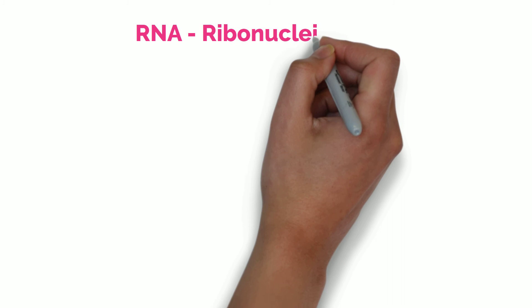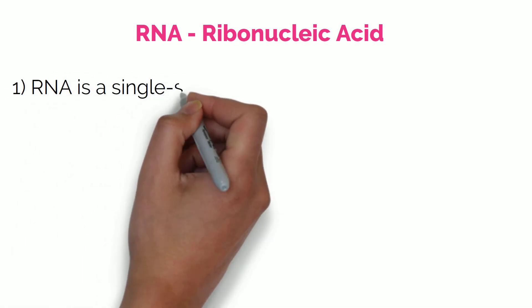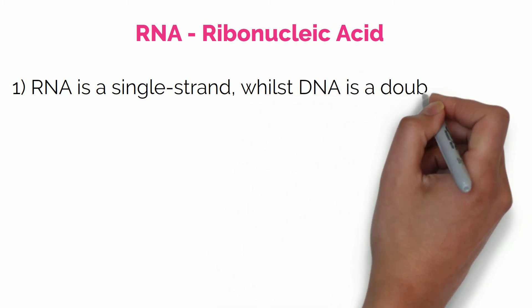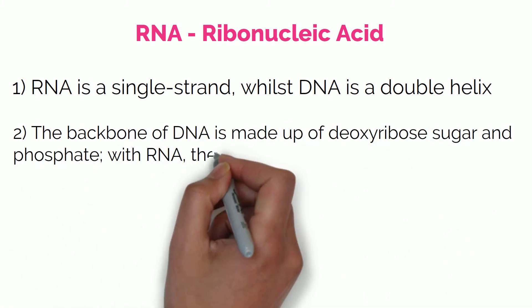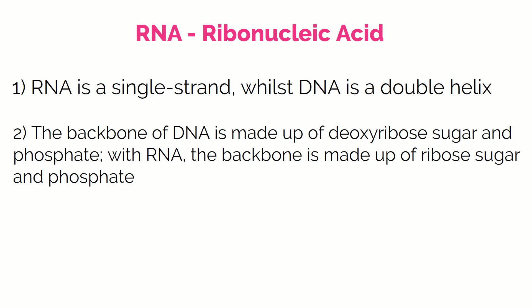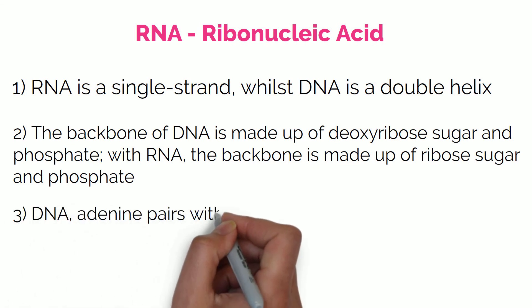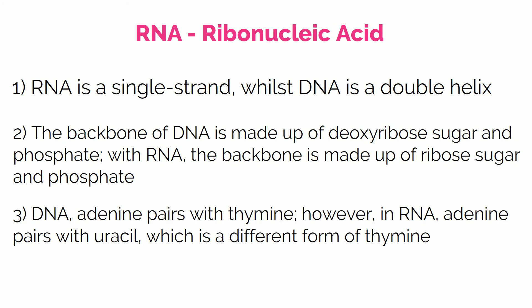Now let's talk about another molecule called RNA. RNA stands for ribonucleic acid. This molecule is very similar to DNA in most ways but there are a few differences. The first difference is that RNA has a single strand whilst DNA is a double helix. The second difference is their backbone: the backbone of DNA is made of deoxyribose sugar and phosphate, whereas with RNA the backbone is made of ribose sugar and phosphate. The third difference is one of the bases — in DNA adenine pairs with thymine, however in RNA adenine pairs with uracil, which is a different form of thymine.